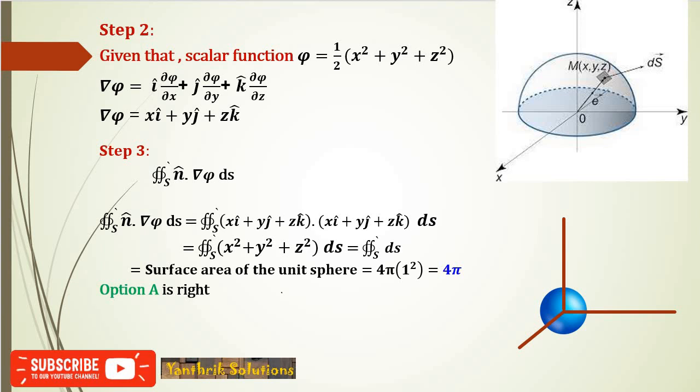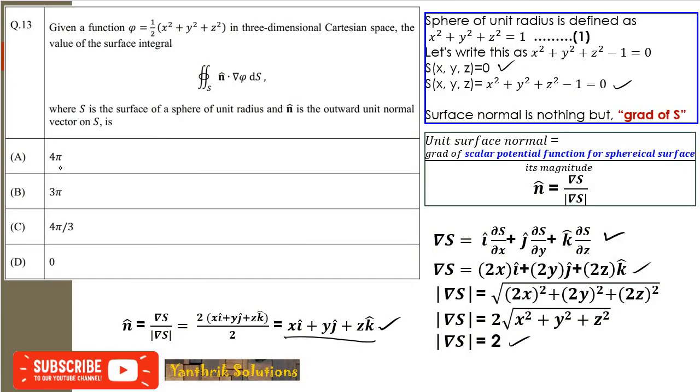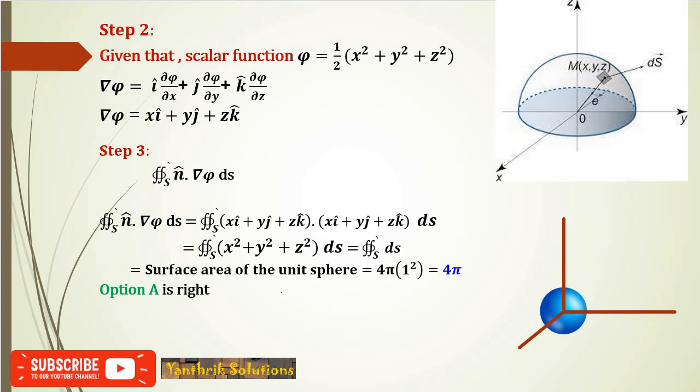This is x i + y j + z k, and del S is the same vector. If you do the dot product of these two vectors, you get x² + y² + z². But x² + y² + z² equals 1 according to the surface equation.